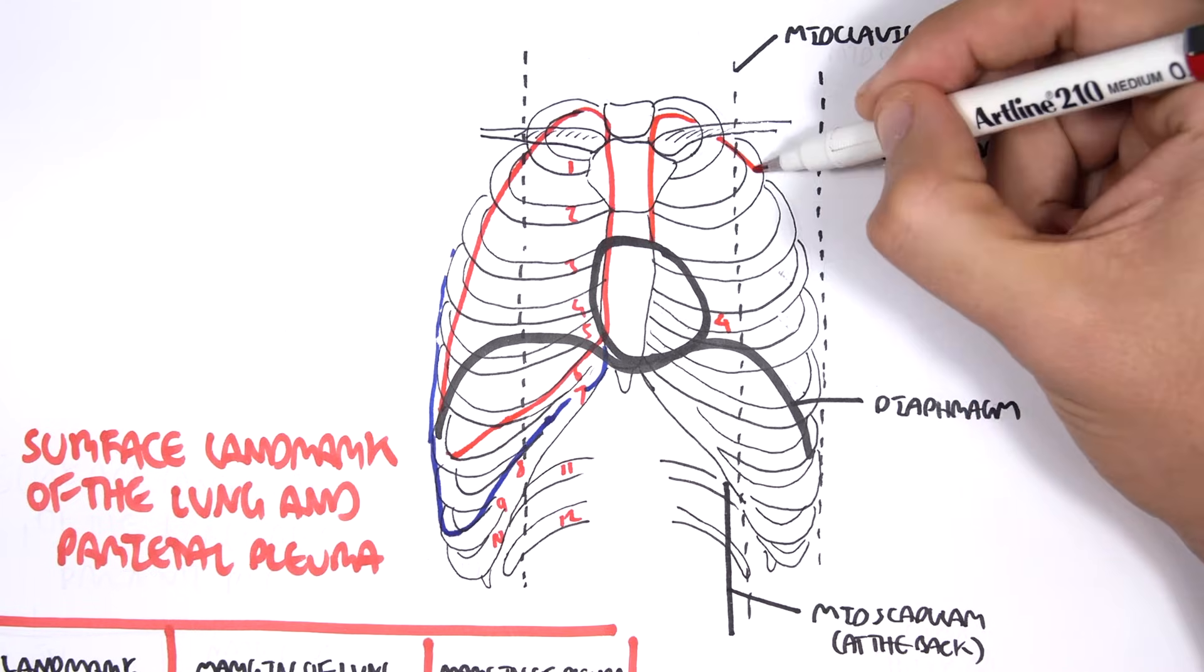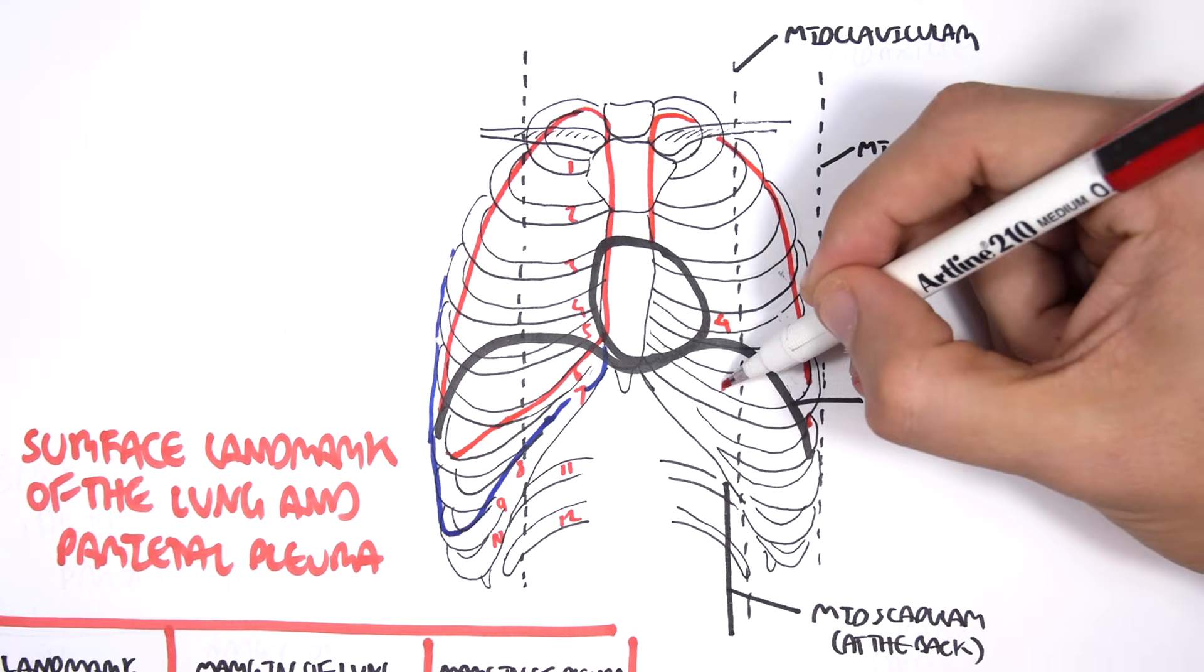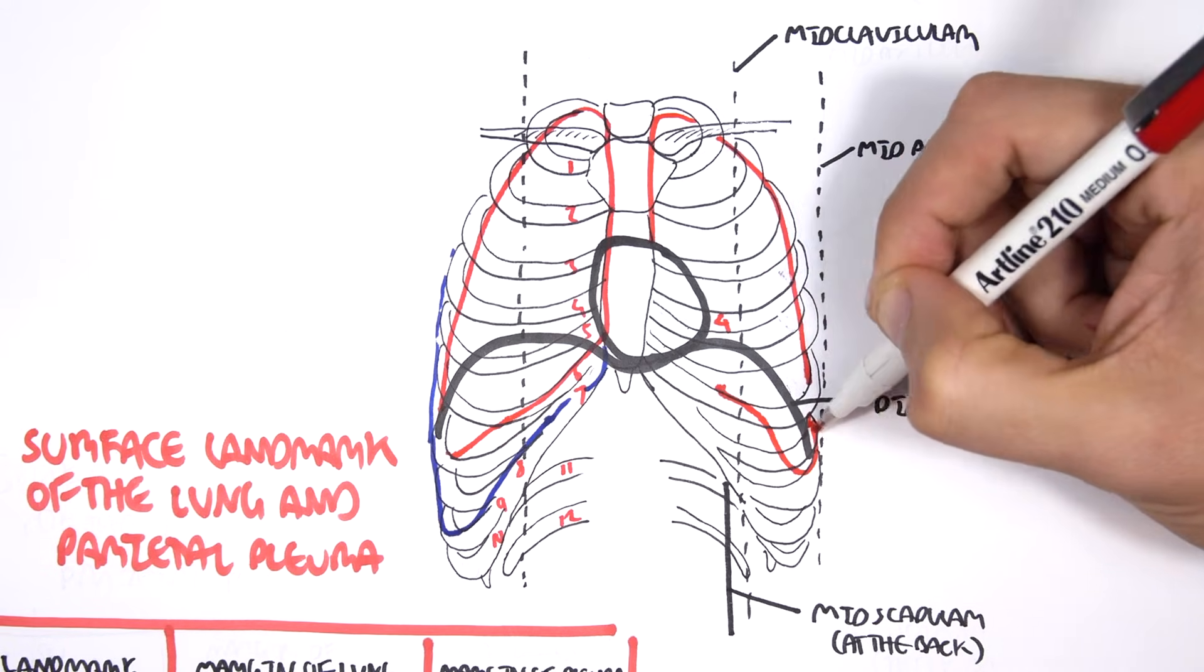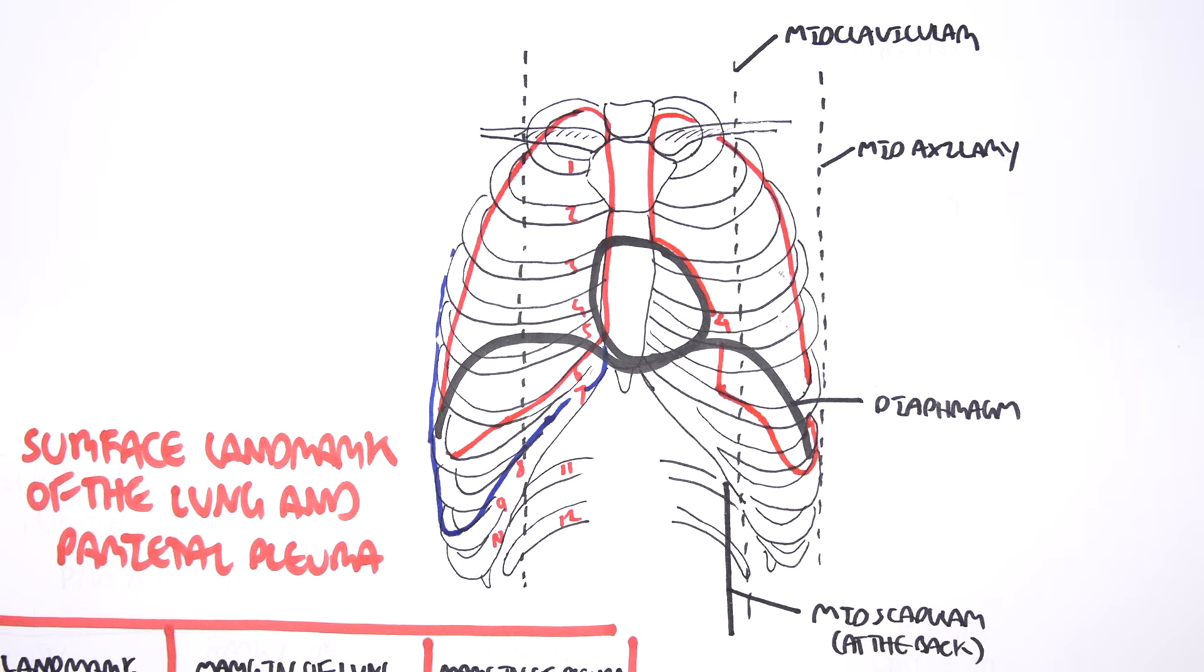The margins of the lung on the left side, instead of being mid clavicular on the sixth rib, it is mid clavicular on the fourth rib. It goes down to being mid axillary on the eighth rib, then everything else is the same. So it's just where the heart is that makes the left and right lung margins and pleura margins slightly different.